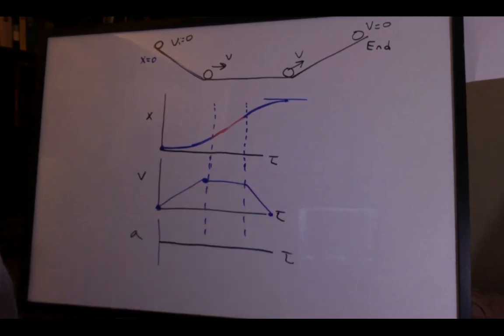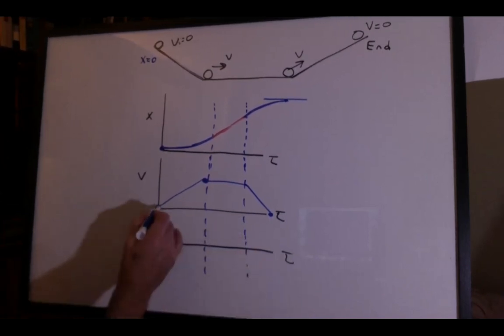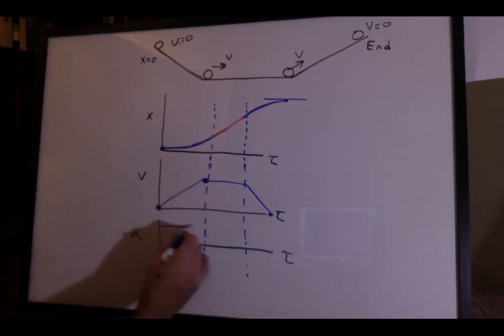And now we can try sketching the acceleration versus time. Again, pause the video and try it first. The time scales should still be the same. We have a positive slope, which would give me a positive acceleration across this time interval.